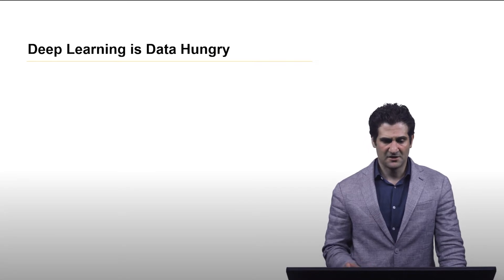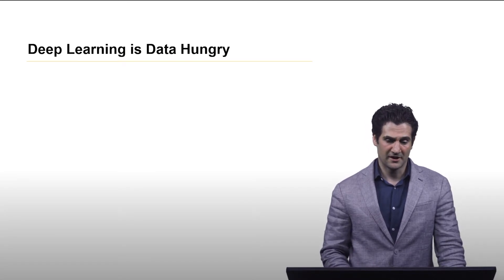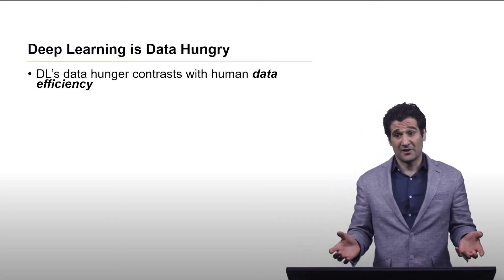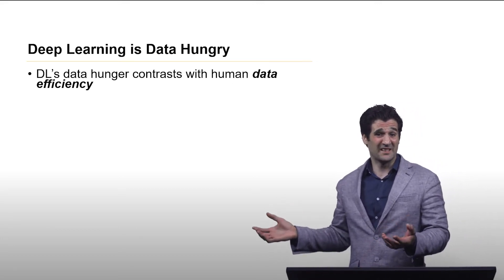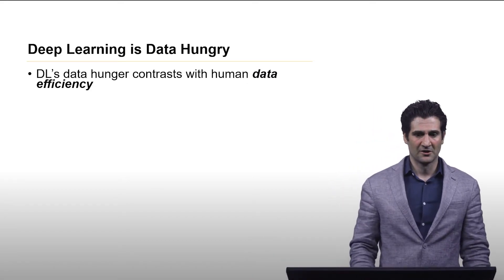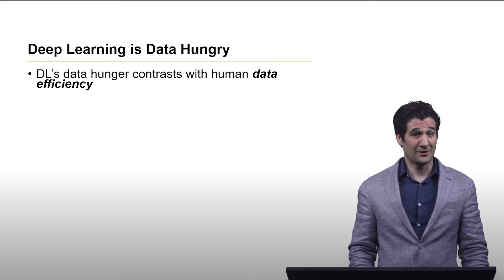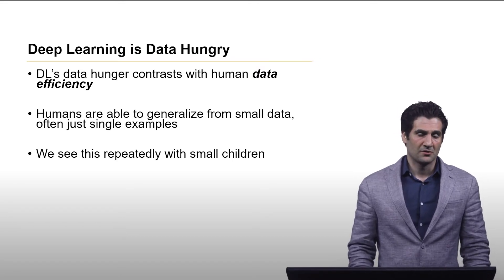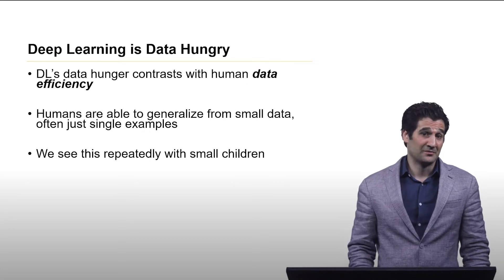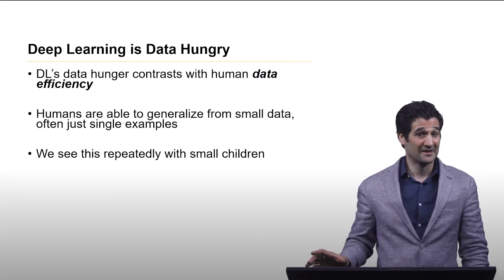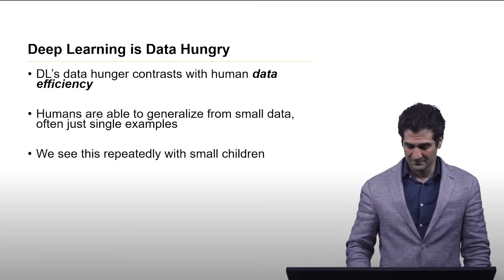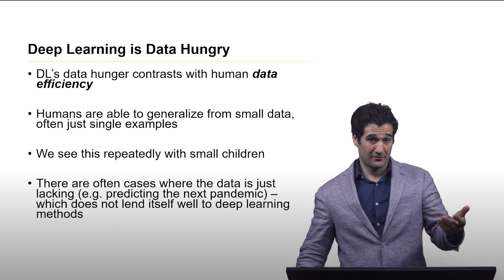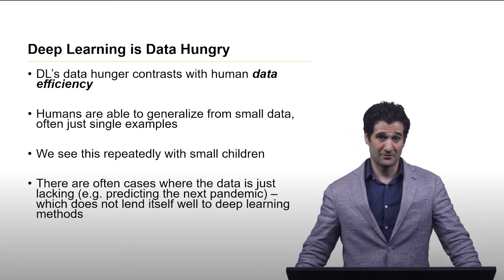So the next thing is, along the lines of deep learning being data hungry, this contrasts with human beings, and we're actually quite data efficient. In order to learn something new, we don't need millions and millions of samples to get good results. Look at any toddler - they learn things very quickly, often with just one training sample. Think of a child touching a hot stove. How many times does that kid need to touch the hot stove to realize that that's not a good idea? It takes them one time.